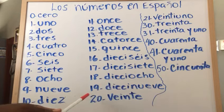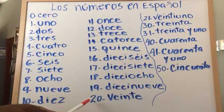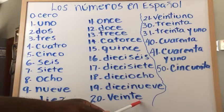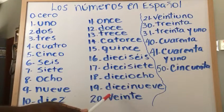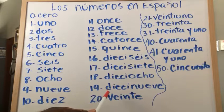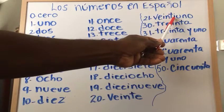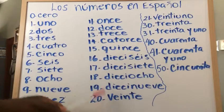After 20, you're going to repeat the same process. It's the number 20 and the number 1, 'veintiuno.' The spelling changes a little bit to make it easier to say — we drop the letter 'e' and put the letter 'i' there. So 21 is 'veintiuno,' then 22 'veintidós,' and so on.